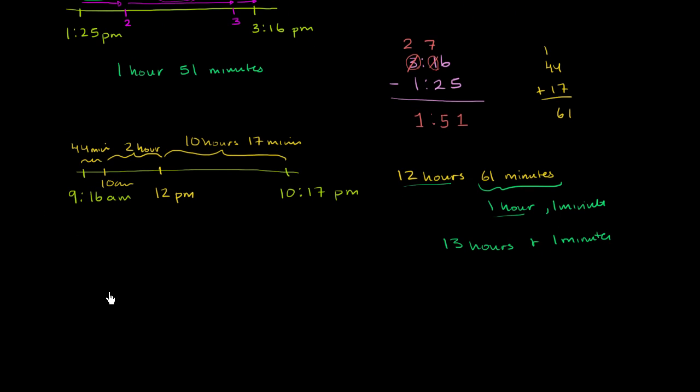So what you do is convert both to military time. 9:16 AM is still going to be 9:16. But 10:17 PM, we're going to add 12 to it, and in military time it'll be 22:17. So this is military time, and we can subtract the starting time from the ending time now.